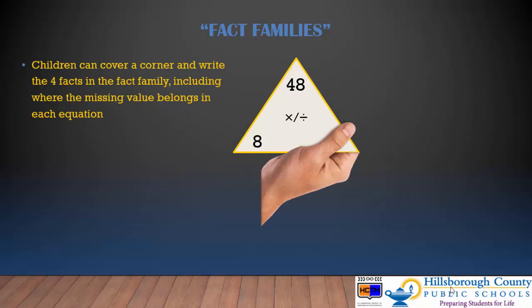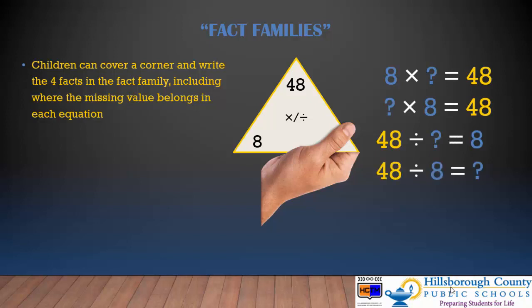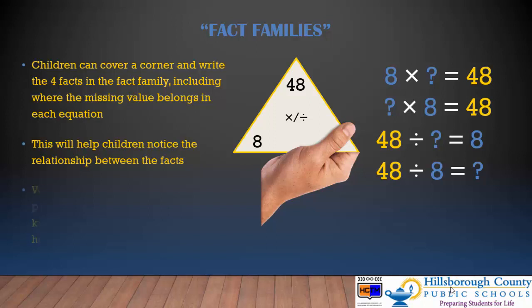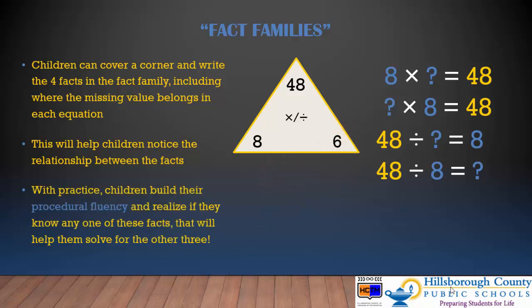Children can cover any corner and write the 4 facts in the fact family, including where the missing value belongs in each equation. So by covering up here, I know I have 8 times something equals 48, or the opposite — how many groups of 8 equals 48. Then I also have my 2 division problems: 48 divided by something equals 8, and 48 divided by 8 equals something. This will help children practice and notice the relationship between all of these facts. With practice, children build their procedural fluency and realize that if they know any one of these facts, that should help them to solve for all of the other three.